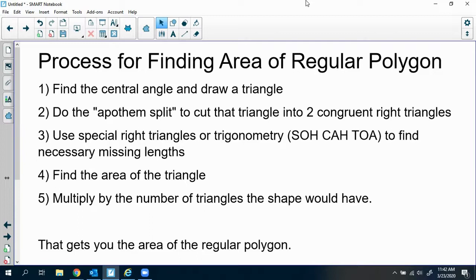Number three, use SOHCAHTOA or 30-60-90s or 45-45-90s to find the missing lengths that are important for finding the area. Then you find the area of that triangle, and then you multiply by the number of triangles the shape would have. That gets you the area of the regular polygon.